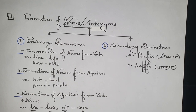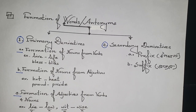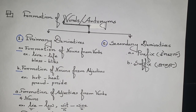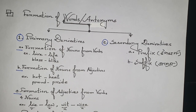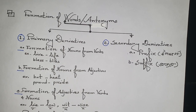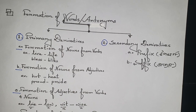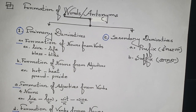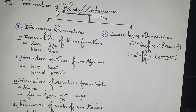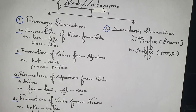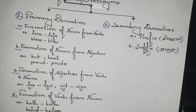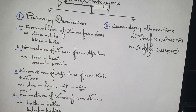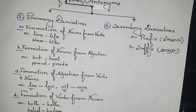What is primary derivatives? Primary derivatives are those derivatives that form words by making some change in the body of the simple word. You will find here some change in the body of the simple word. There are five types of formation of words. Number A: formation of nouns from verbs. Example: live, life. Live is a verb; from there we are getting the noun life. Like this: bless.